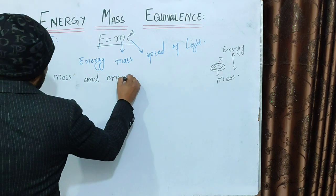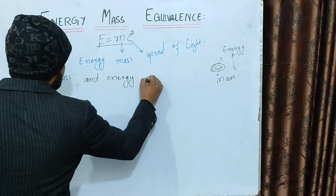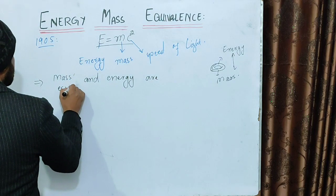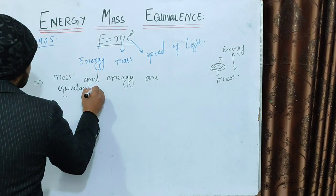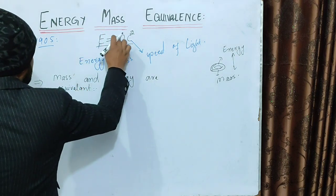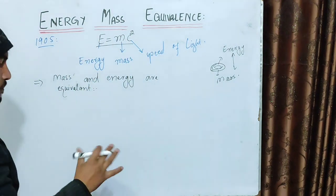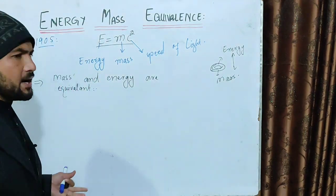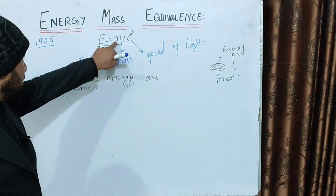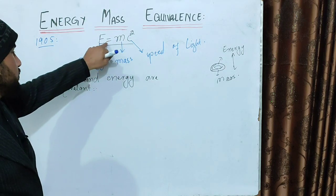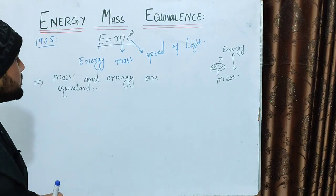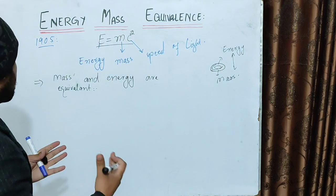Mass and energy are equivalent. Many people say that energy is converted from mass, but that is not correct. The truth is that mass and energy are different forms of the same thing, and they are interchangeable.